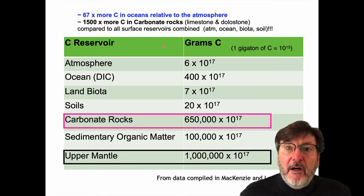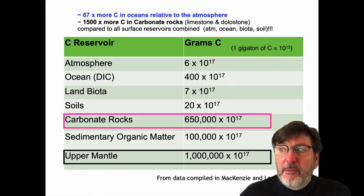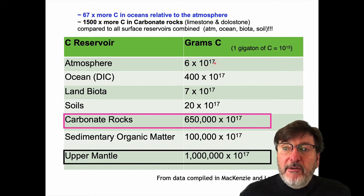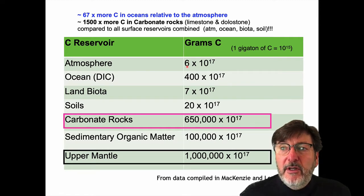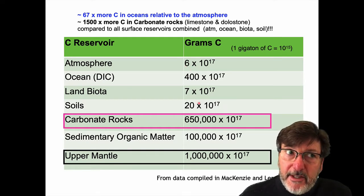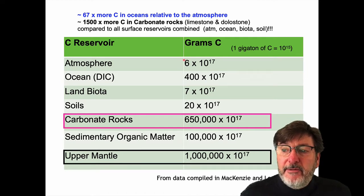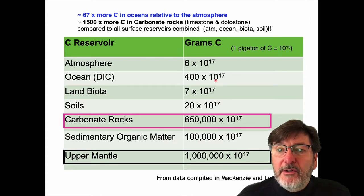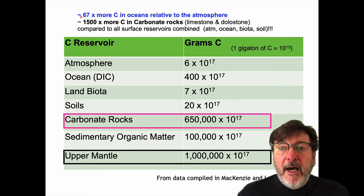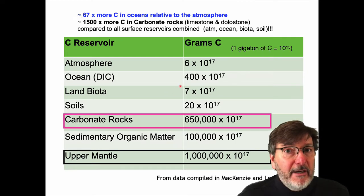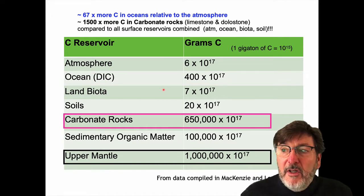Here's that table I mentioned. I made this table based on carbon reservoir categories and estimates of how many grams of carbon are in each reservoir, converting all numbers to the same exponent — 10 to the 17. In the atmosphere, for example, there's 6 times 10 to the 17 grams of carbon. This allows us to compare the relative sizes of these carbon reservoirs. The first thing you'll notice is how much larger the ocean carbon reservoir is relative to the atmosphere — the calculation comes out to about 67 times larger. The oceans are the dog and the atmosphere is a little tail on the dog.